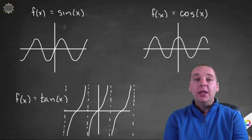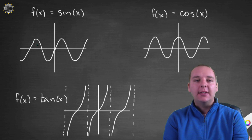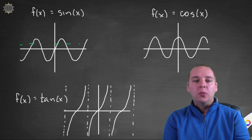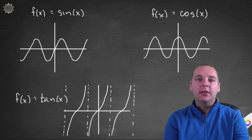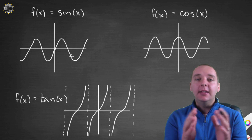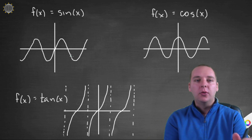When talking about inverse trig functions, none of these immediately have an inverse function. They don't pass the vertical and horizontal line test. They do pass the vertical line test, so that makes them functions, but they don't pass the horizontal line test, which means they are not invertible. The fix is that for all three of these we're going to restrict the domain and only look at a smaller portion of the graph that is one-to-one or monotonic, meaning it passes both the vertical and horizontal line tests.